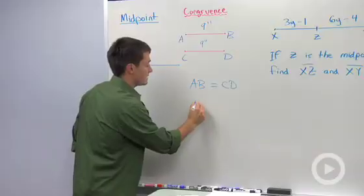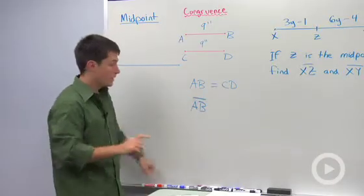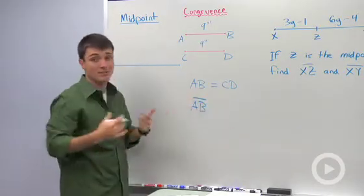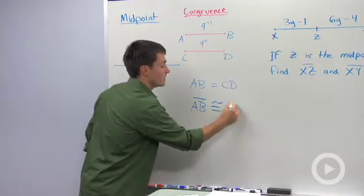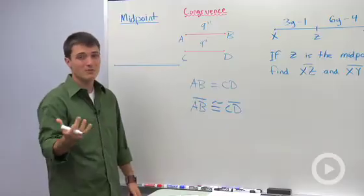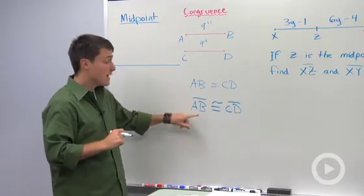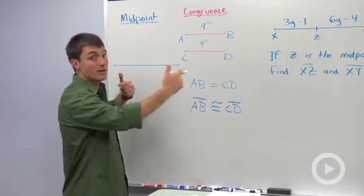So I'm going to say that line segment AB, notice I don't have arrows on here, which tells me that it's not a ray and it's not a line, is congruent to line segment CD. Now, something that we should discuss right now is, two lines can never be congruent because they're infinite.